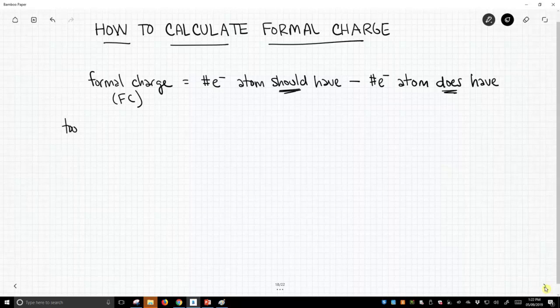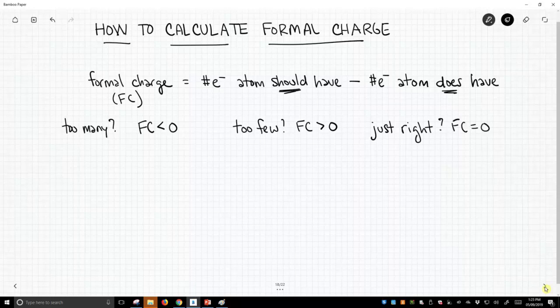If we have too many electrons, then we're going to encounter a formal charge of less than zero. And formal charges typically are either plus one, minus one, or zero. So minus twos and threes are fairly uncommon in organic chemistry. If we have too few electrons, then we're going to have a formal charge that's greater than zero. We're going to have a positively charged atom. And then, of course, if it's just right, the formal charge is going to be zero.